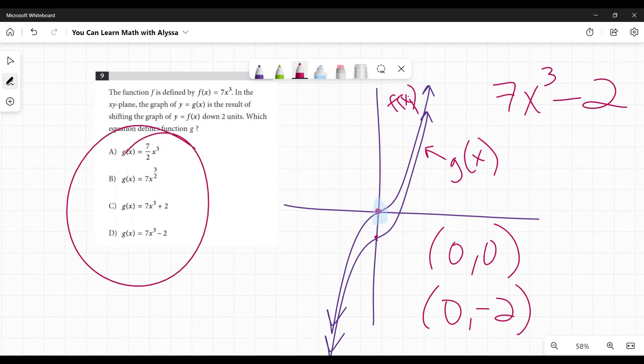So I would look at my answers and go, okay, which one of these, if I plug zero in for x, will I get -2 after I do that math? And again, it's going to get you that answer D. So I plug in zero there for x, I will get 7 times 0, or 0 - 2 is -2. D is my answer.